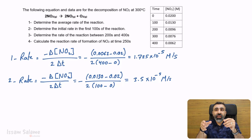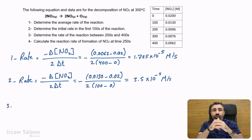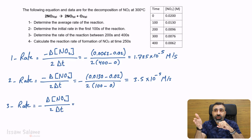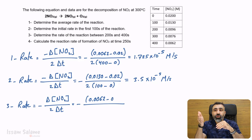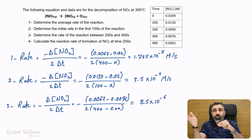Question three: determine the rate of the reaction between 200 seconds and 400 seconds, which means the initial time is 200 and the final time is 400. We write the rate law: rate equals negative delta concentration of NO2 over 2 delta T. The concentration final is 0.0062 minus concentration initial 0.0096, divided by 2 into (400 minus 200). The answer is 8.5 times 10 to the power negative 6 molar per second.